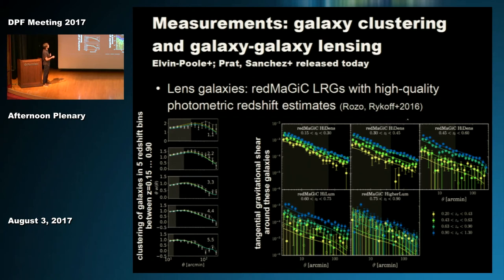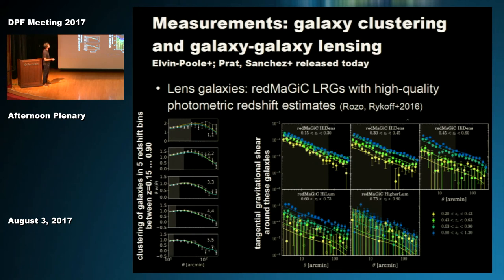As our lens galaxies and the galaxies whose clustering we measure, we use a sample of luminous red galaxies called RedMaGiC—an algorithm for selecting these and assigning them high-quality photometric redshifts. We measure the clustering of these galaxies as a function of their separation in the sky in five different redshift bins. We also measure the tangential shear signal around these galaxies—five different redshift bins of lens galaxies, four different redshift bins of source galaxies—yielding very high signal-to-noise measurements of how these galaxies trace the matter field.